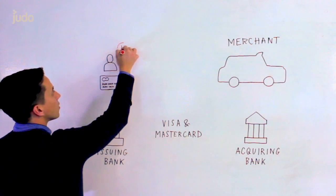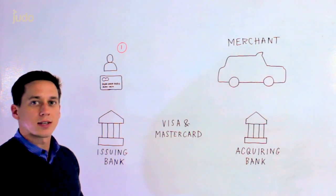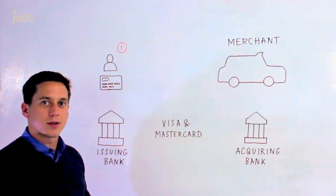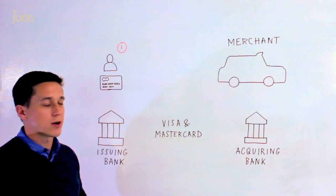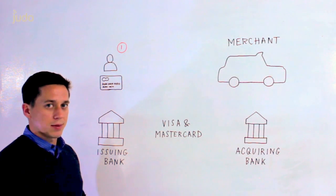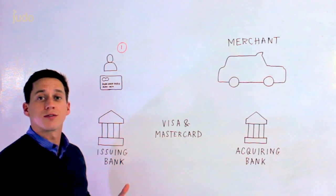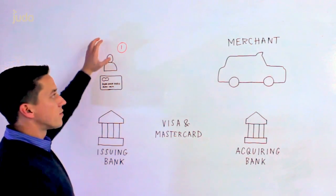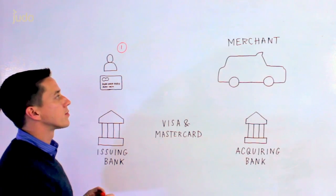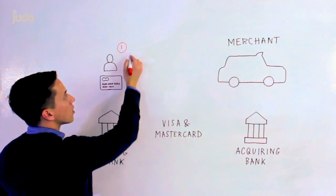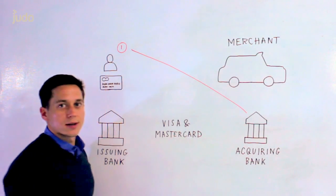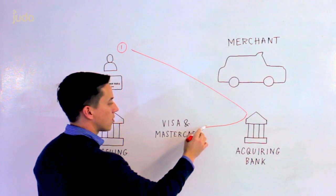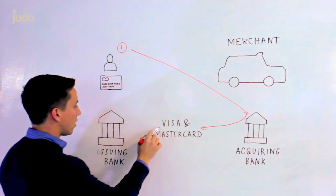Step one: the customer takes out their card and they begin to process a payment. We're going to leave aside for now whether that's a card present payment — so that would be a chip and PIN here in the UK and most of the world outside of North America — or if it's what's called a card not present payment, which is primarily what Judo does. We do that through M-commerce, and others do that through e-commerce. They've somehow presented their information to pay, and that information goes to the acquiring bank, which immediately passes it through to Visa and MasterCard, who pass it on to the issuing bank.